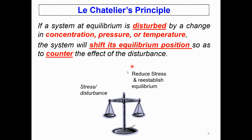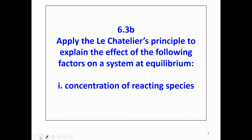For example, if there is a stress put on a balance, then in order to reduce and re-establish the equilibrium, action has to be taken. We shall proceed with applying Le Châtelier's Principle to explain the effect of the following factors on a system at equilibrium. The first one is the concentration of a reacting species.